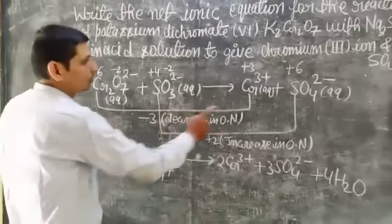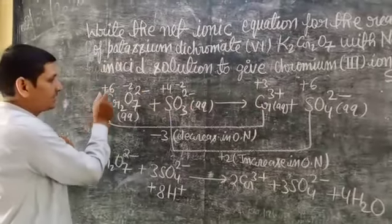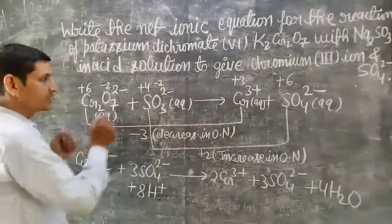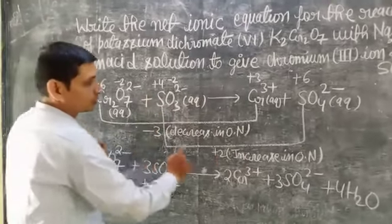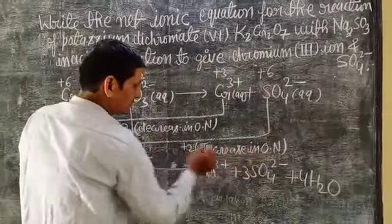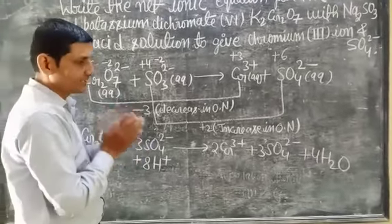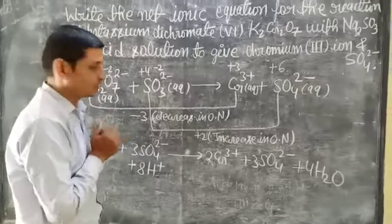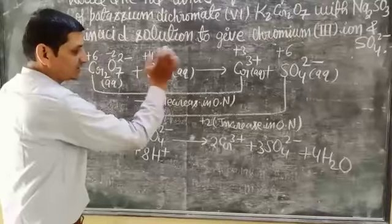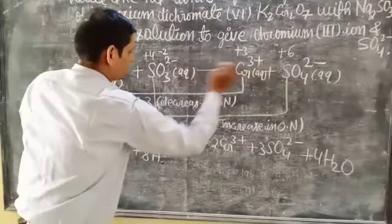Chromium goes from +6 to +3, so oxidation number decreases by 3. Sulfur goes from +4 to +6, so oxidation number increases by 2. Now multiply by suitable numbers so decrease and increase become equal: multiply the chromium equation by 2 and the sulfur equation by 3 to balance. Important point — the number of atoms on both sides must be equal.